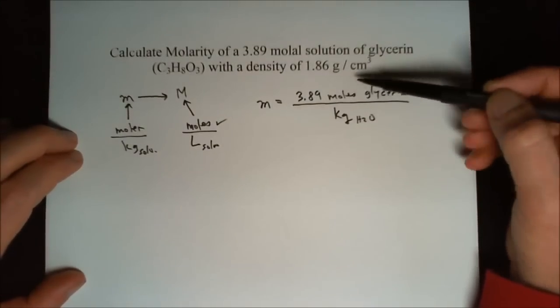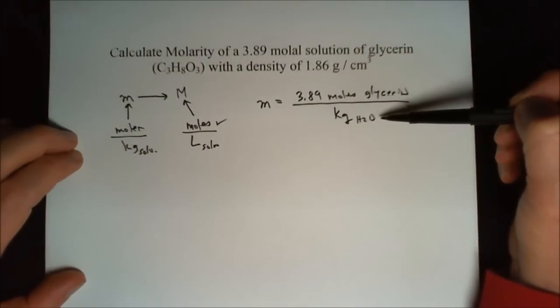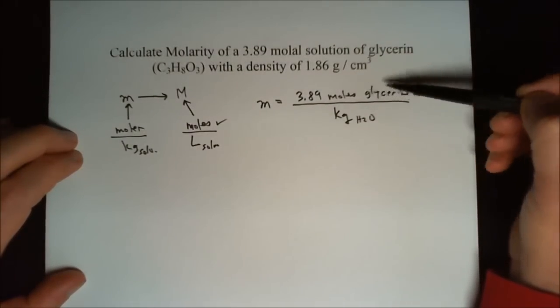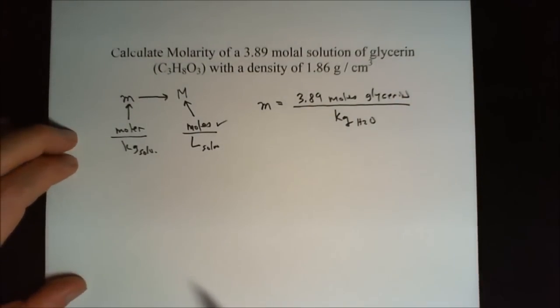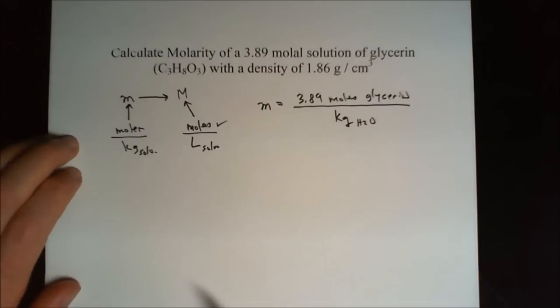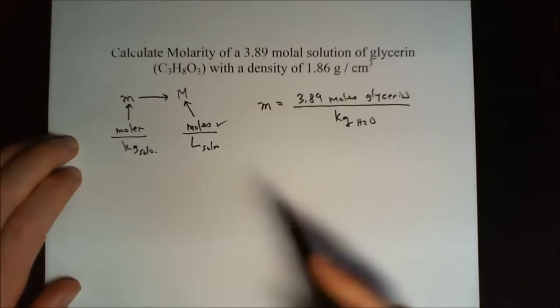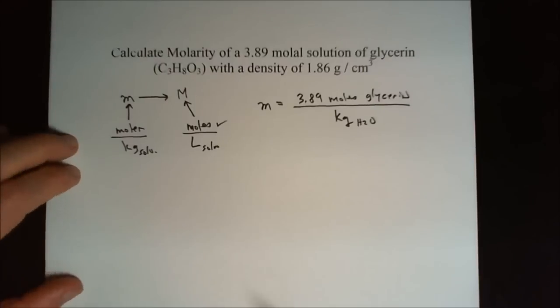The mass of this solution is not 1 kilogram. It's 1 kilogram plus however many grams of glycerin we have. We need to figure out the molecular weight of glycerin, then use that to get the grams of glycerin in that kilogram of water.